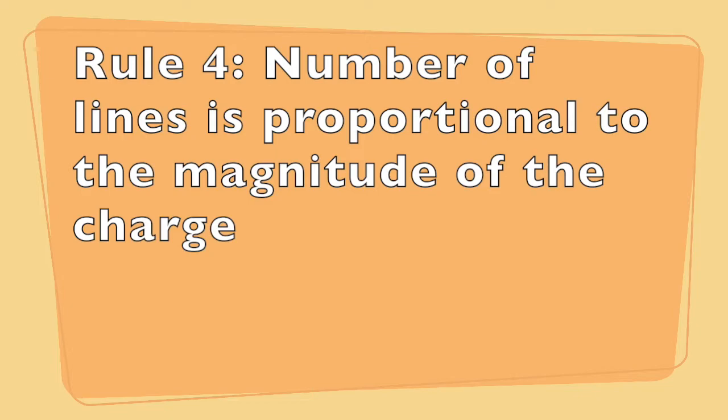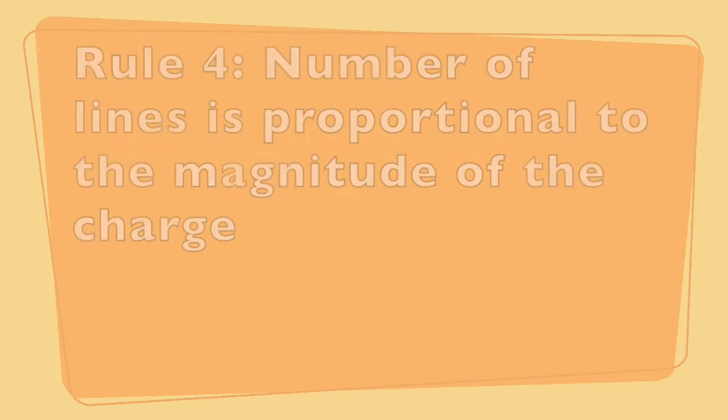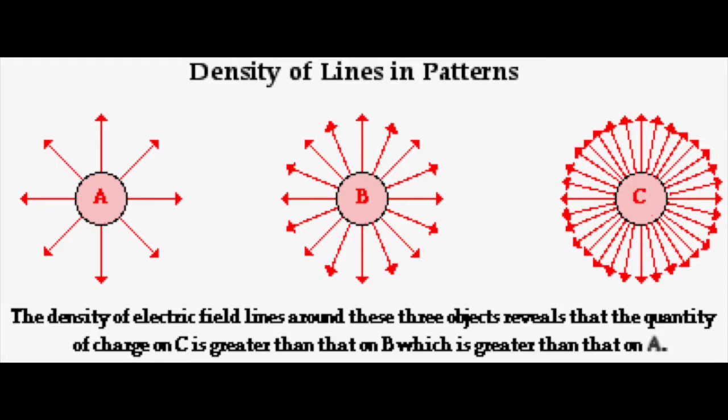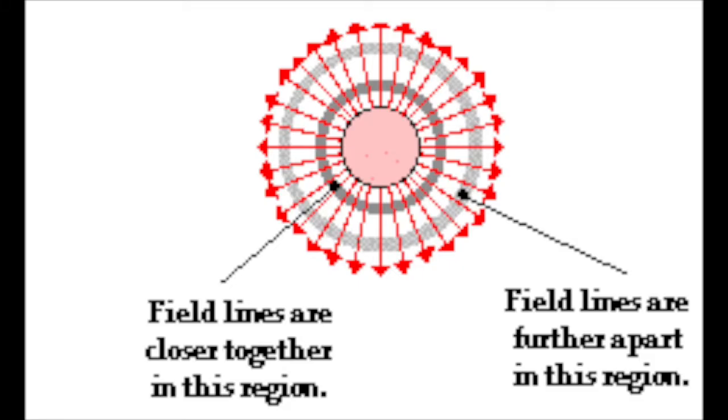The fourth and final rule is that the number of lines coming into or going out of a charge should be proportional to the magnitude of that charge. This works out because we expect that the electric field near a big charge is going to be stronger than the electric field near a weak charge. So it makes sense that we'd want to have more lines going into or coming out of a strong charge than a weak charge. This also has the added benefit that if you draw lines radially coming out of a charge, as you get further and further away from the charge, then the spacing between the lines gets larger and the field gets weaker as it should.